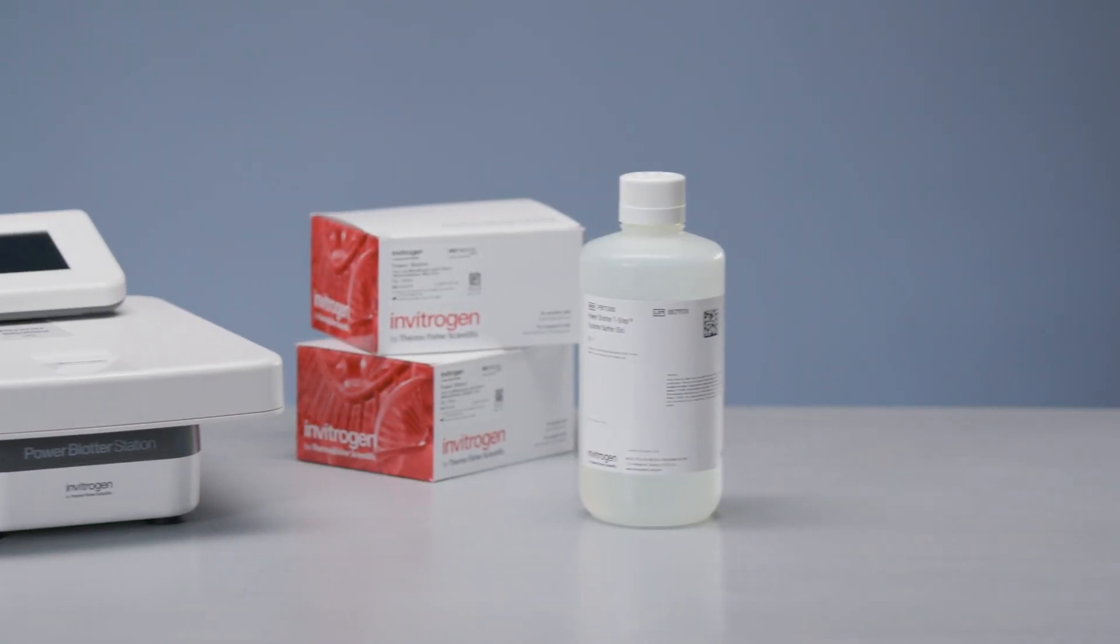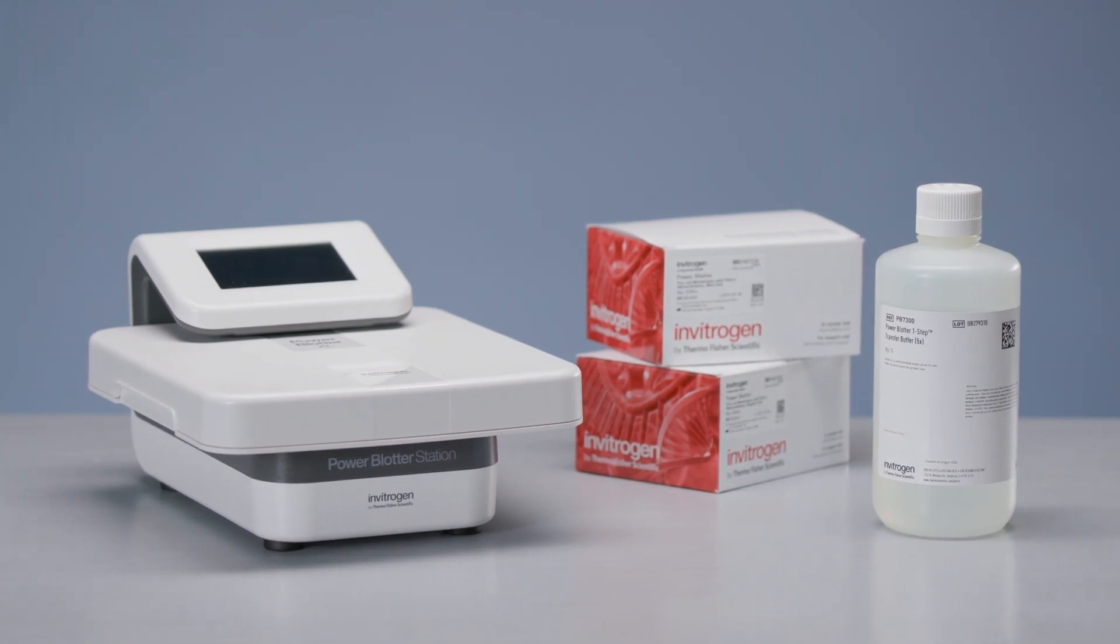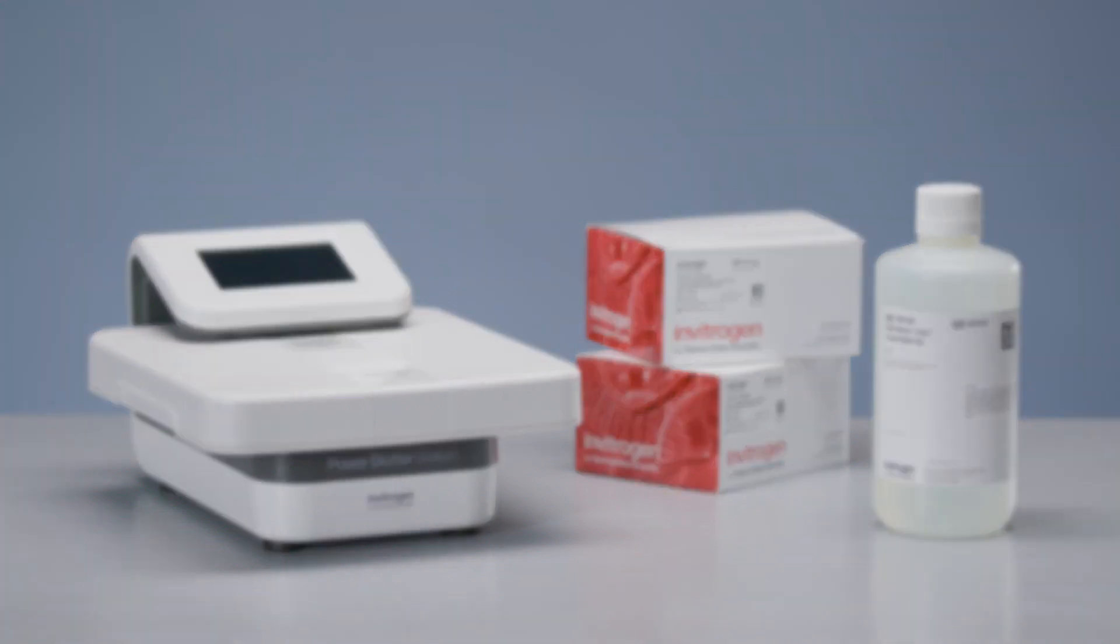The Power Blotter One-Step Transfer Buffer is an optimized high ionic strength buffer that facilitates rapid transfer conditions when combined with the high current conditions of the Power Blotter system. Filter papers soaked in the One-Step Transfer Buffer act as an ion reservoir. The system can also be used for standard semi-dry transfer protocols that use traditional buffers.